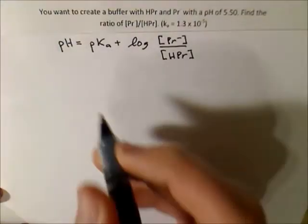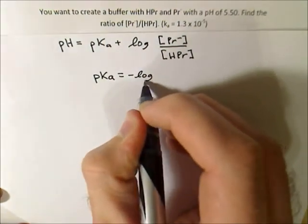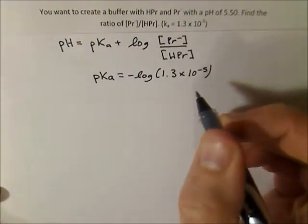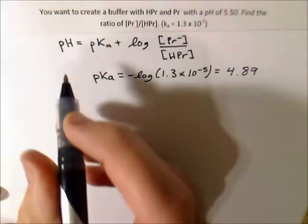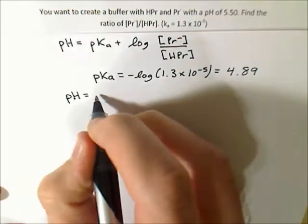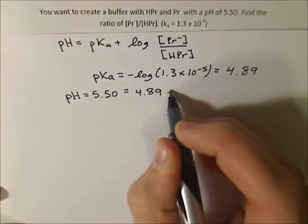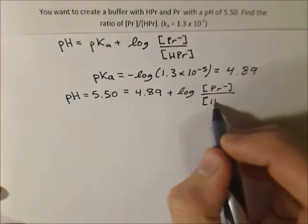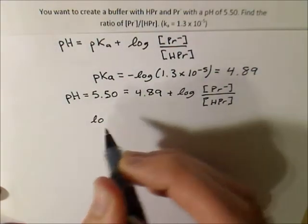Okay, so that's the equation we're going to use. So, now we can find the pKa, 4.89. And the pH that we want to obtain is 5.50. So, we'll plug that in on the side. Okay, so now we can subtract 4.89 from both sides.